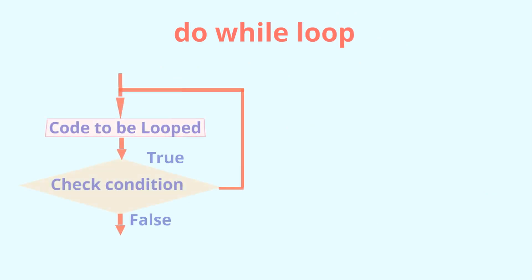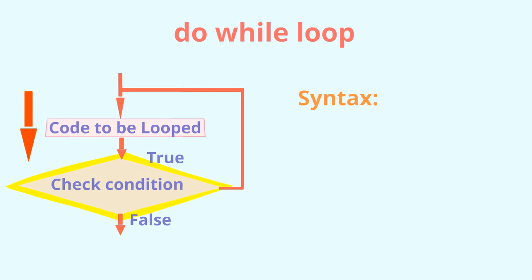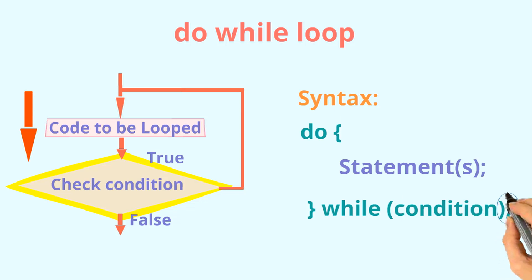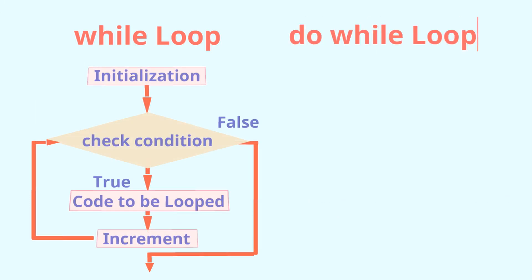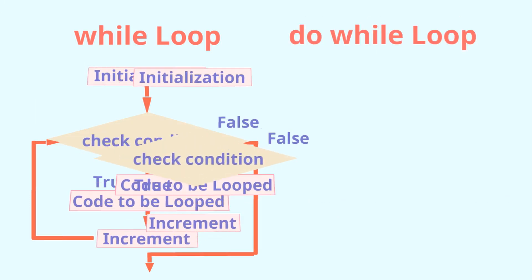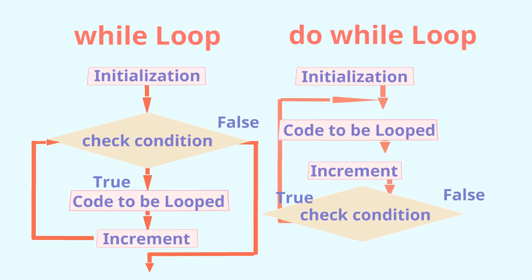Now let's look at the do-while loop. In a do-while loop, the test condition comes after your loop body, so the loop is executed at least once. Note the syntax — this loop has a semicolon at the end. If you want to compare the while with the do-while, it restructures like this.